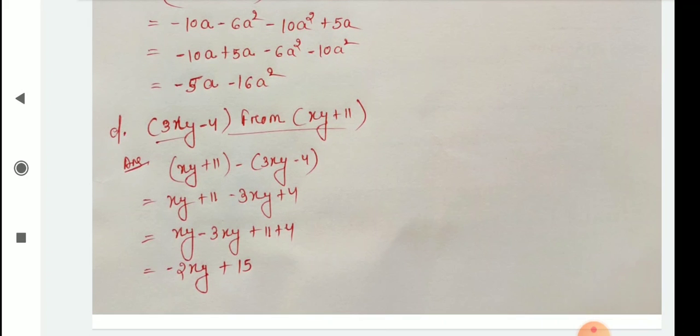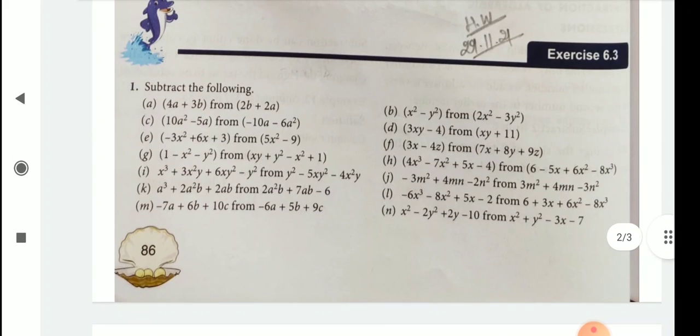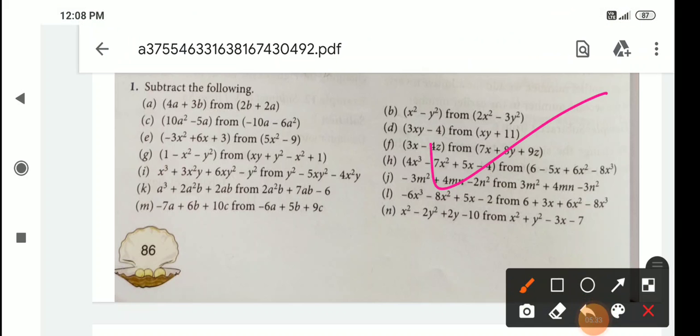d also you see children: 3xy minus 4 from xy plus 11. Here also we write the terms and do their additive inverse and arrange in like terms. Then we subtract. Like this children, you complete all the bits. Exercise 6.3. This is your homework. You complete it in your math copy. Okay children, thank you.